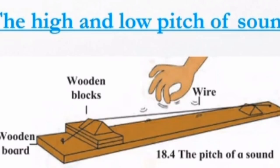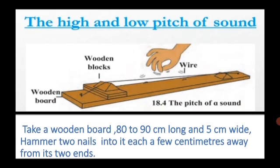Let's try an activity: high and low pitch of sound. Take a wooden board 80 to 90 centimeters long and 5 centimeters wide. Hammer two nails into it, each a few centimeters away from its two ends. Tie the ends of a thin metal wire to the nails so that the wire is stretched tightly between them.